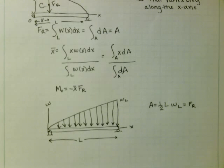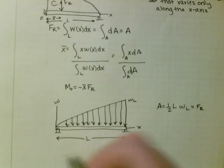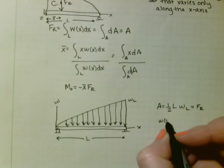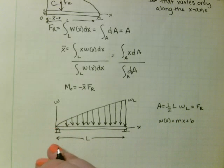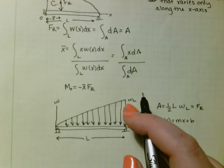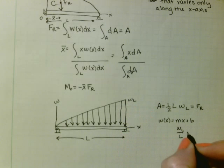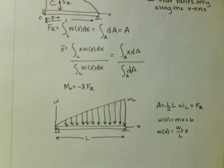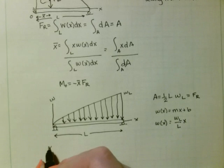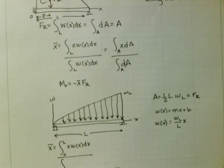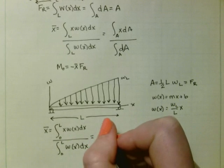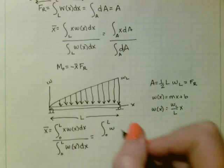Now let's find where x-bar is. First, let's put the load in the form y = mx + b. So w(x) equals mx plus b. B is zero because it intersects at the origin. At x equals L, we want it to equal w_L, so the slope is w_L over L, giving w(x) equals (w_L / L) times x. Now we need to find x-bar, which equals the integral from 0 to L of x times w(x) dx, divided by the integral from 0 to L of w(x) dx.